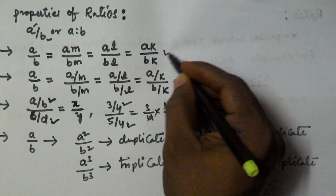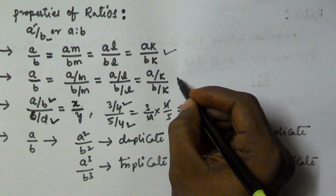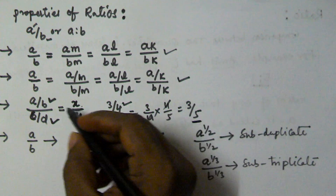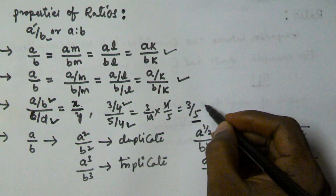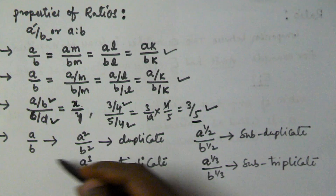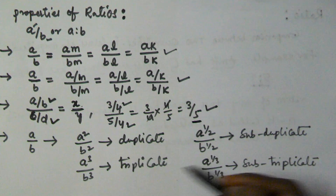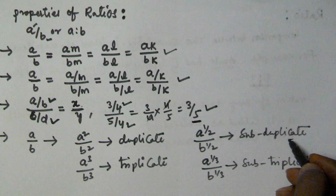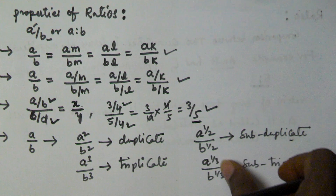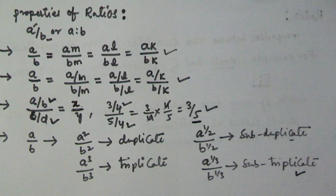So to summarize: the first property is if you multiply the numerator and denominator of the ratio by the same number, the value is not going to be changed. The second one is if you divide the numerator and denominator by the same number, the ratio is not going to be changed. The ratio of two fractions can be expressed in terms of the ratio of two integers. And if A by B is the ratio, then A squared by B squared is called a duplicate, A cubed by B cubed is called a triplicate, A to the power 1 by 2 over B to the power 1 by 2 is called subduplicate, and A to the power 1 by 3 over B to the power 1 by 3 is called subduplicate. These are all the properties of ratios.